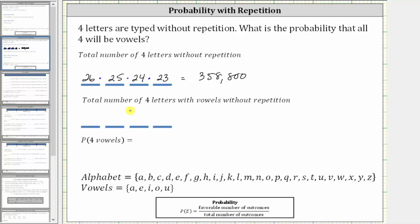Now determine the number of ways of typing four letters with vowels without repetition. Because there are five vowels, there are five ways to type the first letter. Because repetition is not allowed, there are four ways to type the second vowel, three ways to type the third vowel, and two ways to type the fourth vowel.